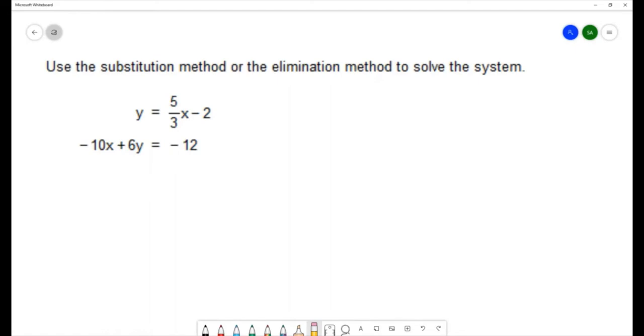Now the directions give us the choice of solving with the substitution method or the elimination method. As I'm looking at this problem I think I would choose the substitution method because one of my equations has the y equals. So I'm going to take 5 thirds x minus 2 and substitute that into y in the other equation because this equals y.